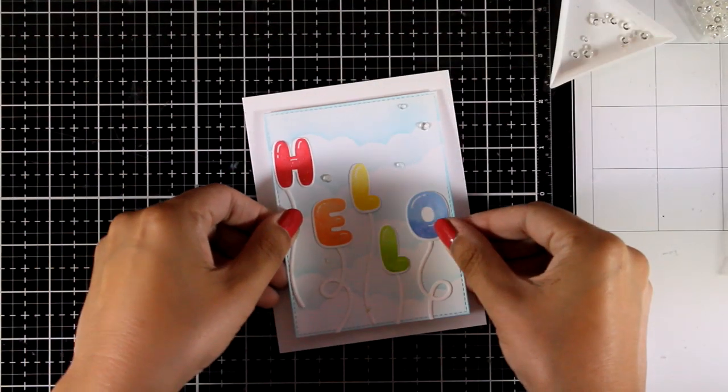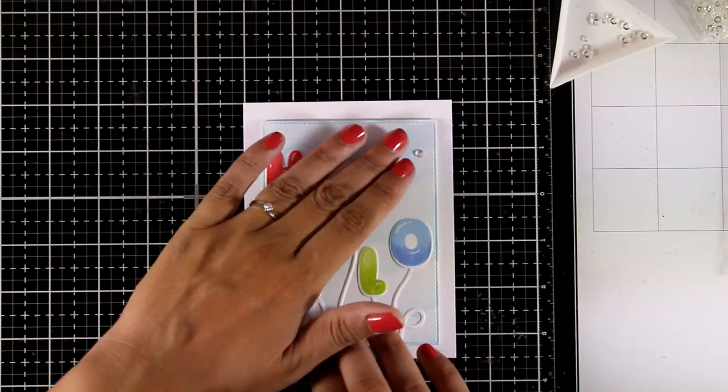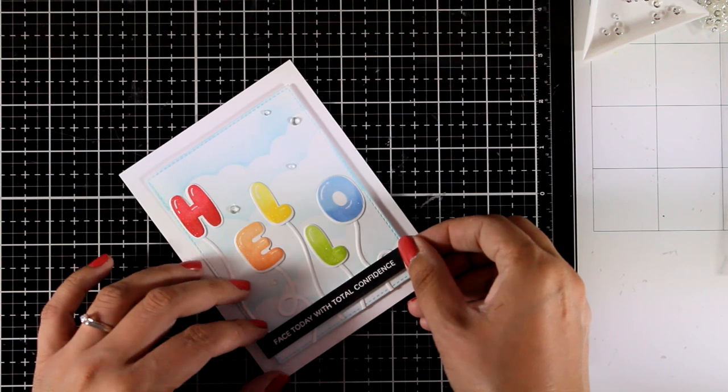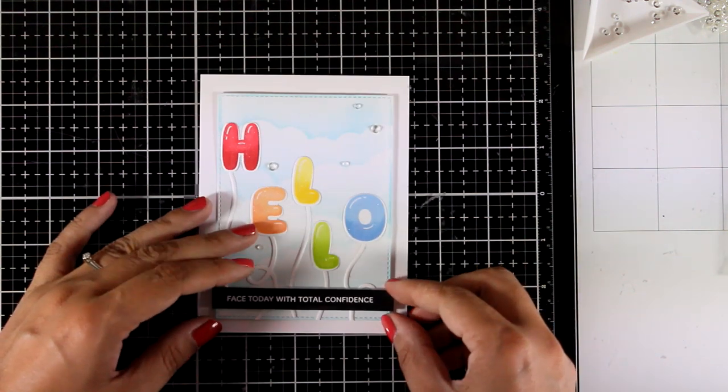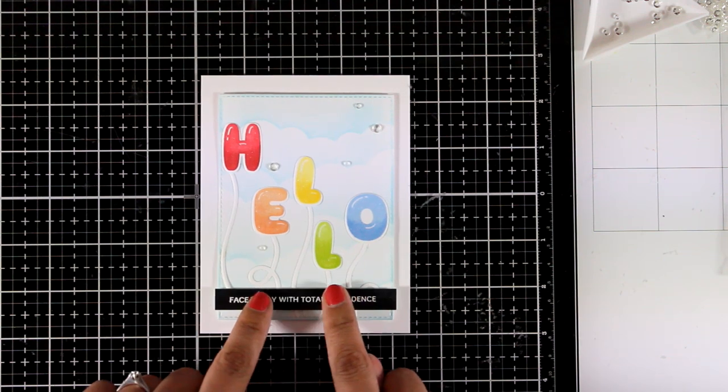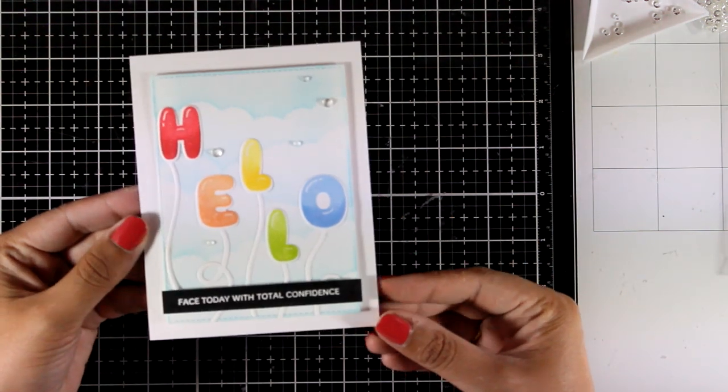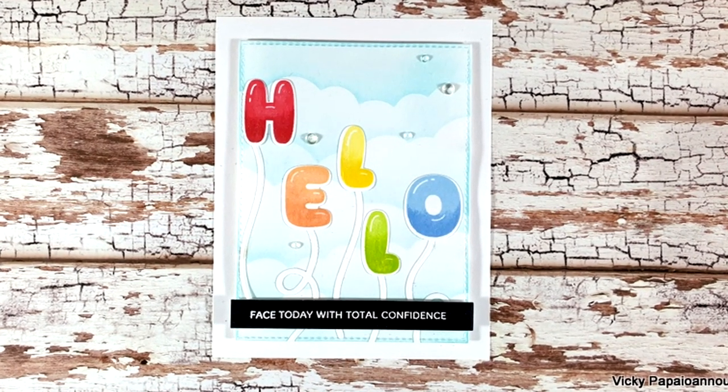Then finally I am going to stick this panel on top of my standard card that is 4 1/4 by 5 1/2 and I do have foam tape at the back. To finish off my card and to complete my sentiment I just stamped one more sentiment with VersaMark ink over black cardstock and I embossed it with white embossing powder. I really love the contrast that this gives on my card. And you can see here the finished card.